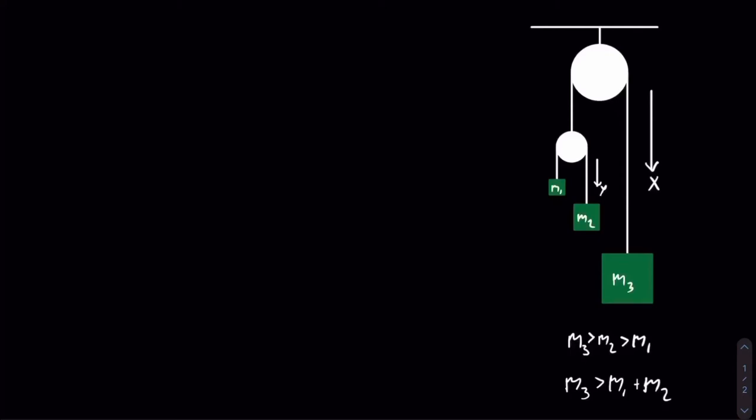This video is on how to use Lagrangian mechanics to find the equations of motion for a compound Atwood machine. I start out by making some assumptions about the masses — if you had the masses, these assumptions would not have to be made. I stated that m2 is greater than m1, meaning that the smaller pulley will be rotating clockwise. I also said that m3 is greater than m1 plus m2, meaning that the larger pulley will also be rotating clockwise.